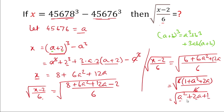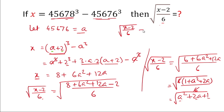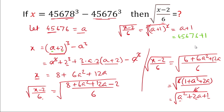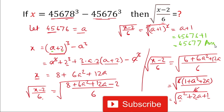If you look at a squared plus 2a plus 1, it is in the form of (a plus 1) whole squared. So the expression becomes the square root of (a plus 1) squared. The square root and the square cancel, giving a plus 1. The value of a is 45676, so a plus 1 equals 45677.